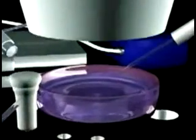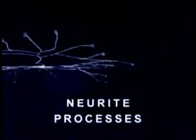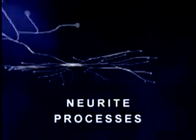To better understand mercury's effect on the brain, let us first illustrate what brain neurons look like and how they grow. In this animation, we see three brain neurons growing in a tissue culture, each with a central cell body and numerous neurite processes.